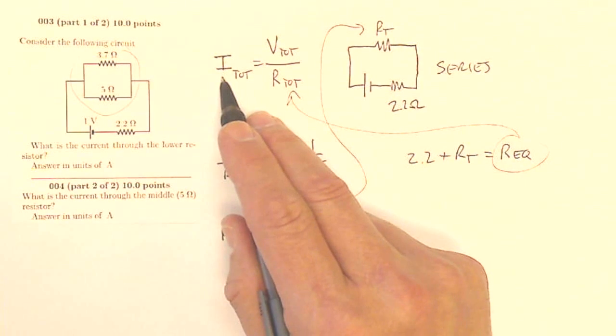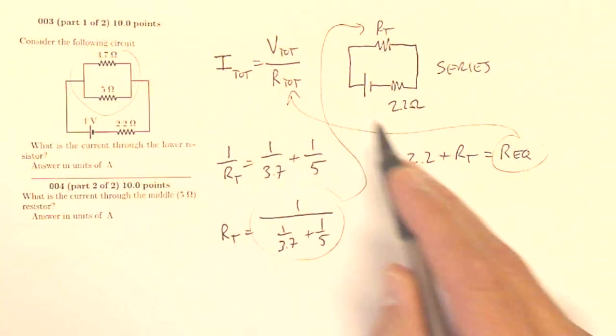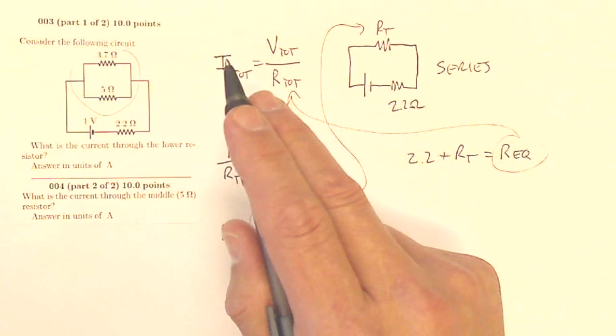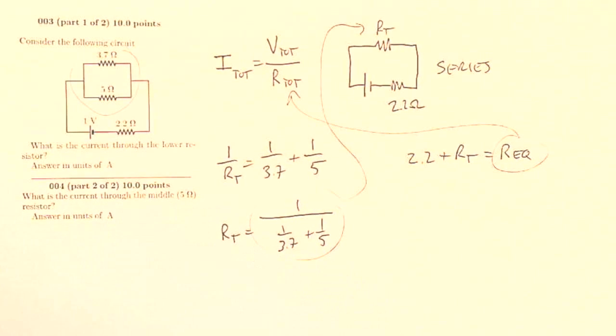So my total current flowing through the circuit is going to be my battery voltage of 1 volt divided by this equivalent resistance of the whole circuit. That will give me the current leaving the battery. That is also the current flowing through this lower resistor. So that's good, answering units of amps.